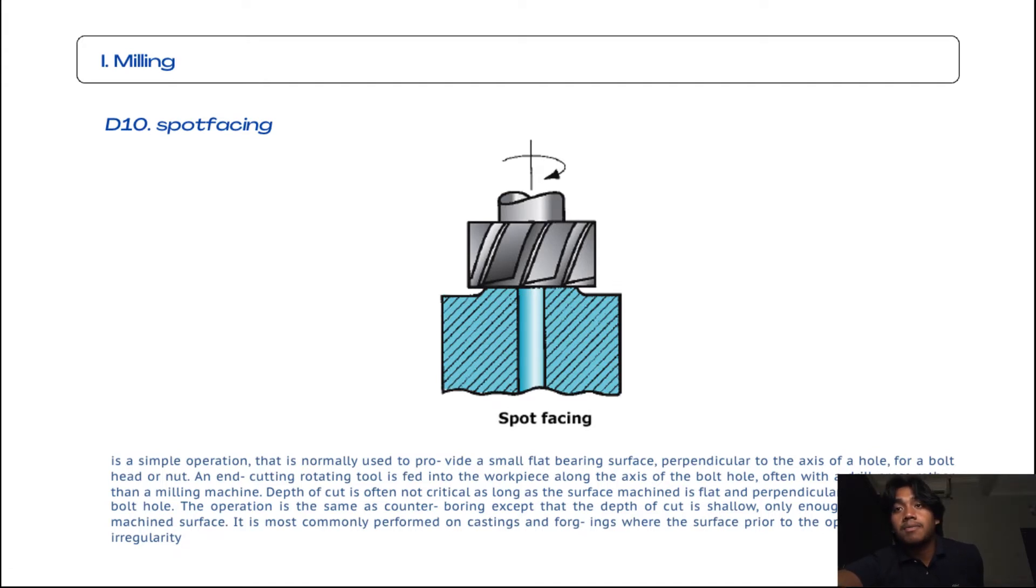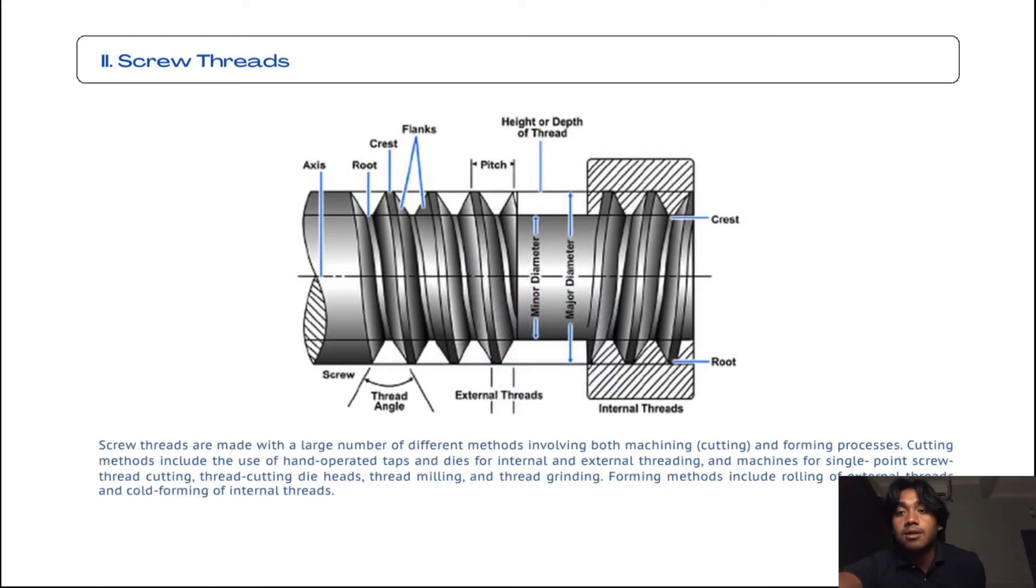It is most commonly performed on castings and forgings where the surface prior to the operation has some irregularity. We're going to the second topic from the presentation, which is screw threads. Screw threads are made with a large number of different methods involving both machining cutting and forming processes. Cutting methods include the use of hand operated taps and dies for internal and external threading, and machines for single point screw thread cutting, thread cutting die heads, trap milling, and thread grinding. Forming methods include rolling of external threads and cold forming of internal threads.